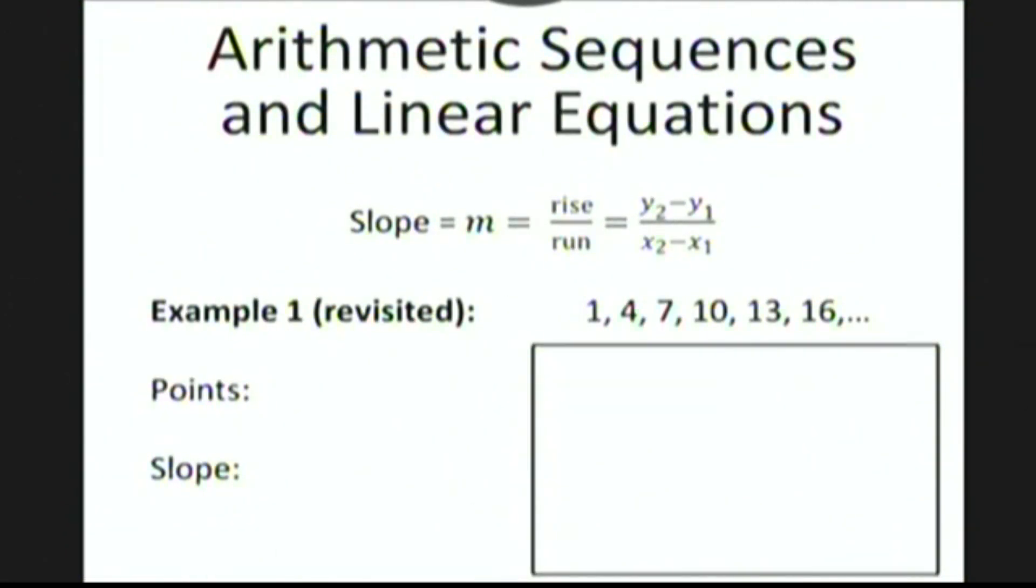Let's look at arithmetic sequences and their relationship to linear equations. Recall for a moment that the slope of a line is given by rise over run, or y2 minus y1 over x2 minus x1, where (x1, y1) and (x2, y2) are points on the line. Don't worry about the technical details too much right now. It'll all become clear in just a moment.